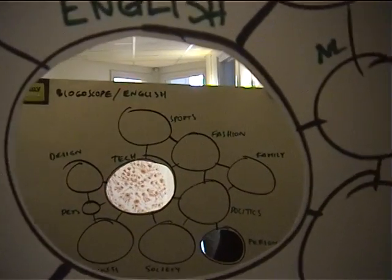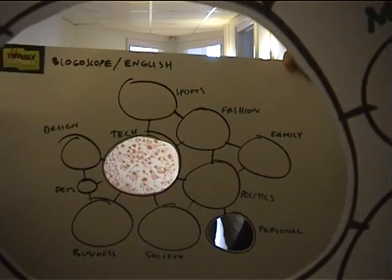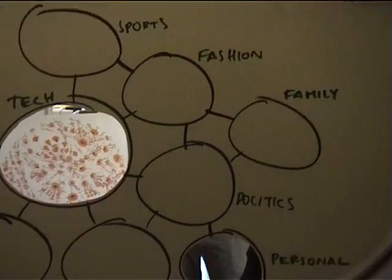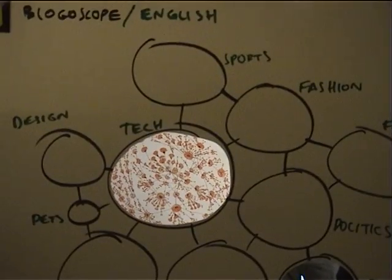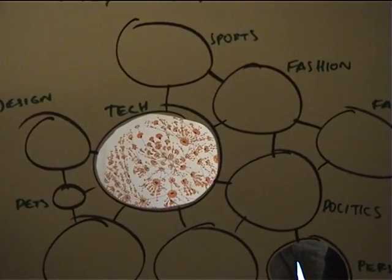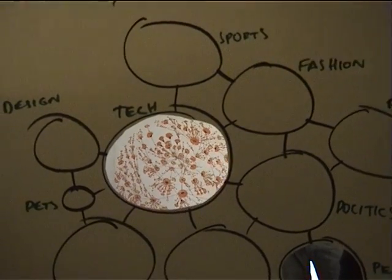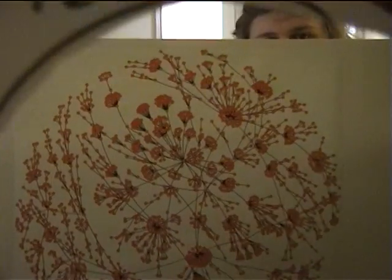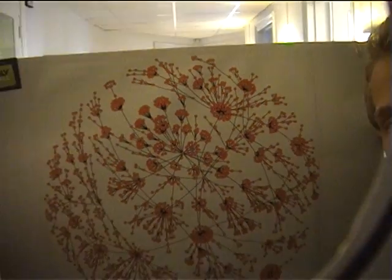We see the English part of the blogosphere. We have different categories: sports, fashion, family. We can choose to zoom in — in this case, to technology. And here we see the entire technology blogosphere.